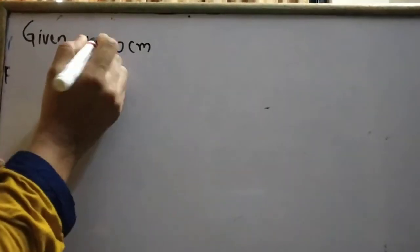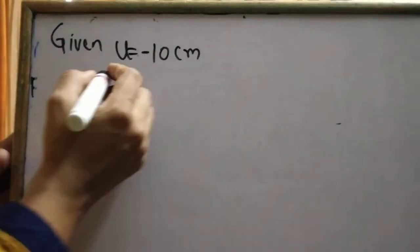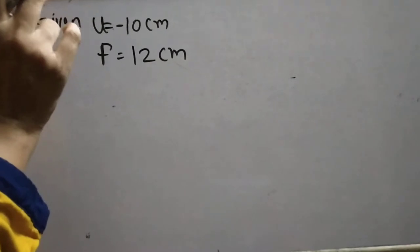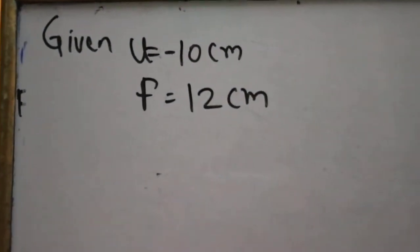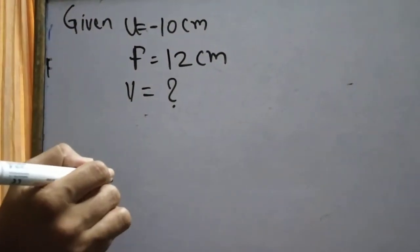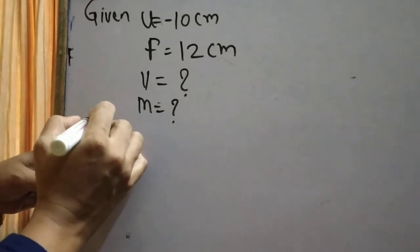For the last problem: an object is placed at a distance of 10 cm from a convex lens. Object distance u = −10 cm (always negative). The focal length of the convex lens is +12 cm (positive for convex). We need to find the position and nature of the image.